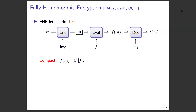An important property — sometimes implicit but really critical for today's talk — is that this should be compact. The size of the ciphertext encrypting f(m) should be much smaller than the function itself. One trivial way to get homomorphic encryption would be to append f to the ciphertext and decrypt m then apply f. But that requires attaching f to the ciphertext, so what makes this non-trivial is this compactness property.